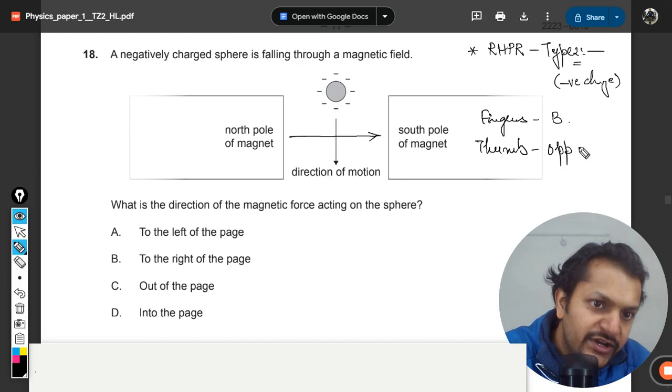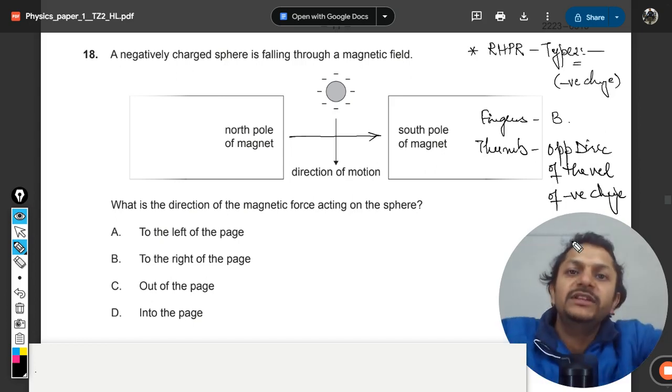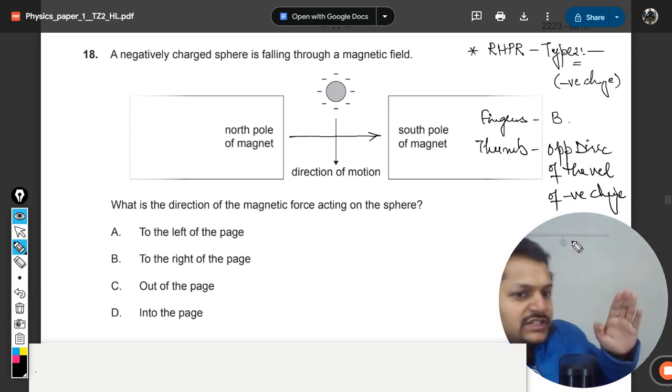My thumb will be pointing towards kind of opposite direction of the velocity of negative charge. If it is a positive charge then it will be the same direction. If it is negative charge it will be in the opposite direction.